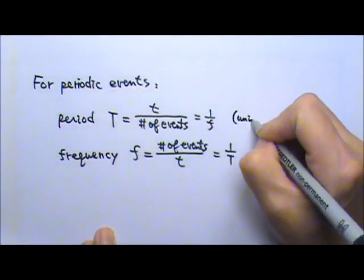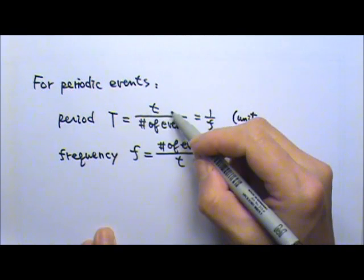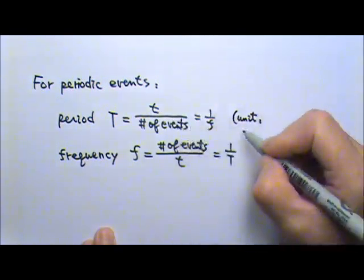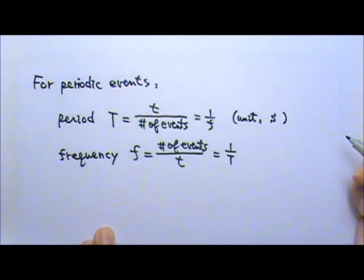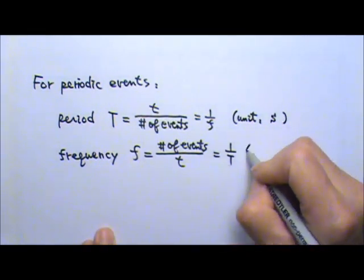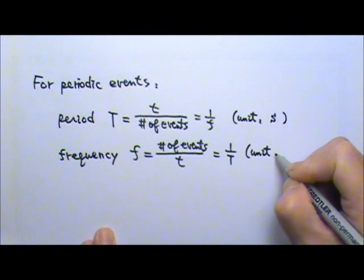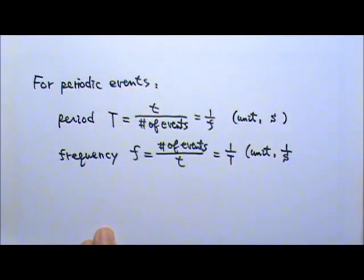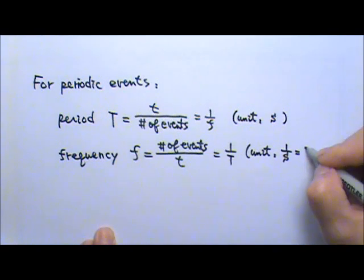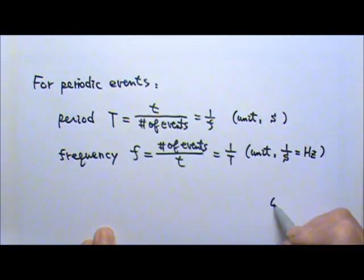And since the period is the time it takes for one whole event, the standard unit for this is seconds. Of course, that means the unit for frequency, the standard unit for frequency will be 1 over seconds, or we call it hertz. So if something is 60 hertz, that means it happens 60 times every second.